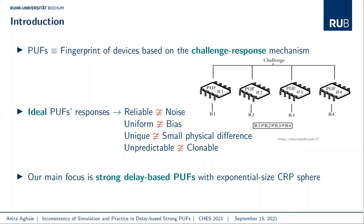This challenge-response mechanism is the main approach of these one-way functions, with a unique behavior for each PUF. An unpredictable, stable, and unique response is generated for a random challenge to create a set of challenge-response pairs (CRPs). Each PUF under ideal conditions generates a reliable, uniform, and unique response, but not a predictable one. Our main focus in this work is strongly delay-based PUFs.